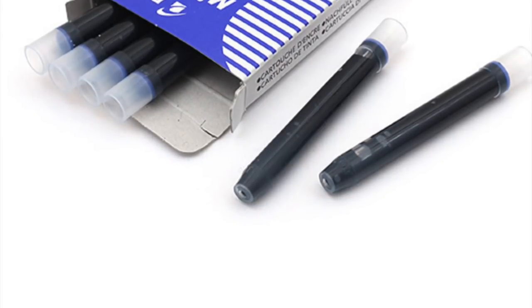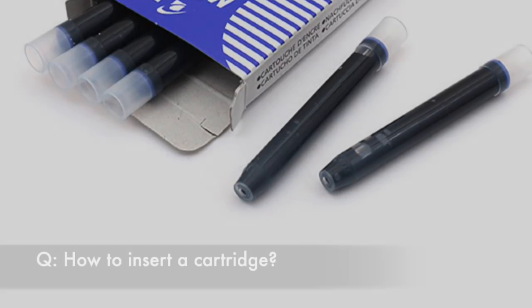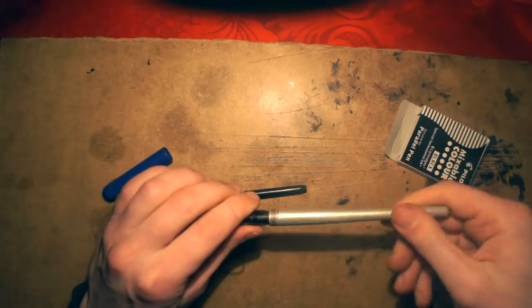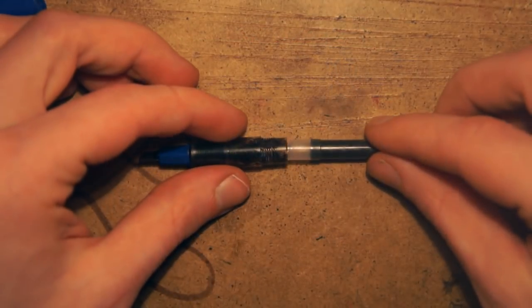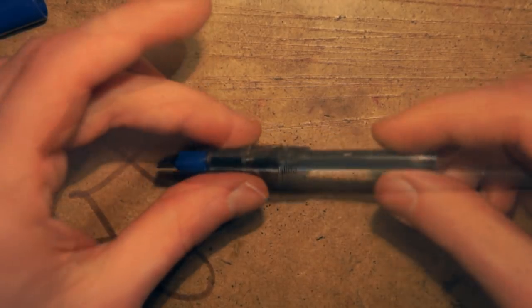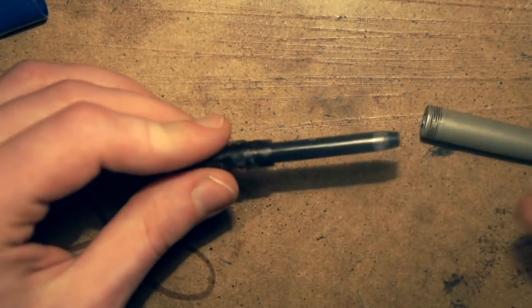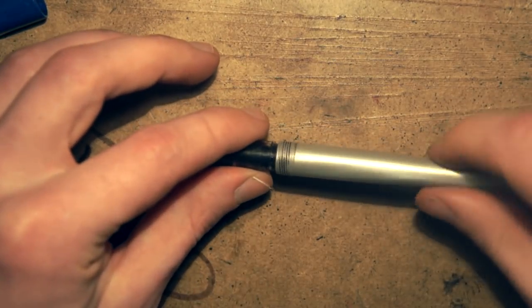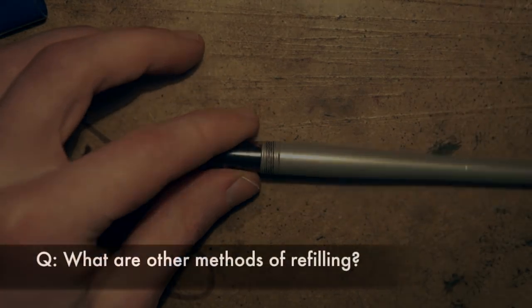Also there are other methods of refilling and inks to use. Screw off barrel and insert cartridge into grip. The cartridge's upper side will break and ink will fill the ink controller. Make sure you stick the cartridge till it breaks. If ink slows down, squeeze the sides of cartridge a couple of times. Roll on barrel and you're ready to write.